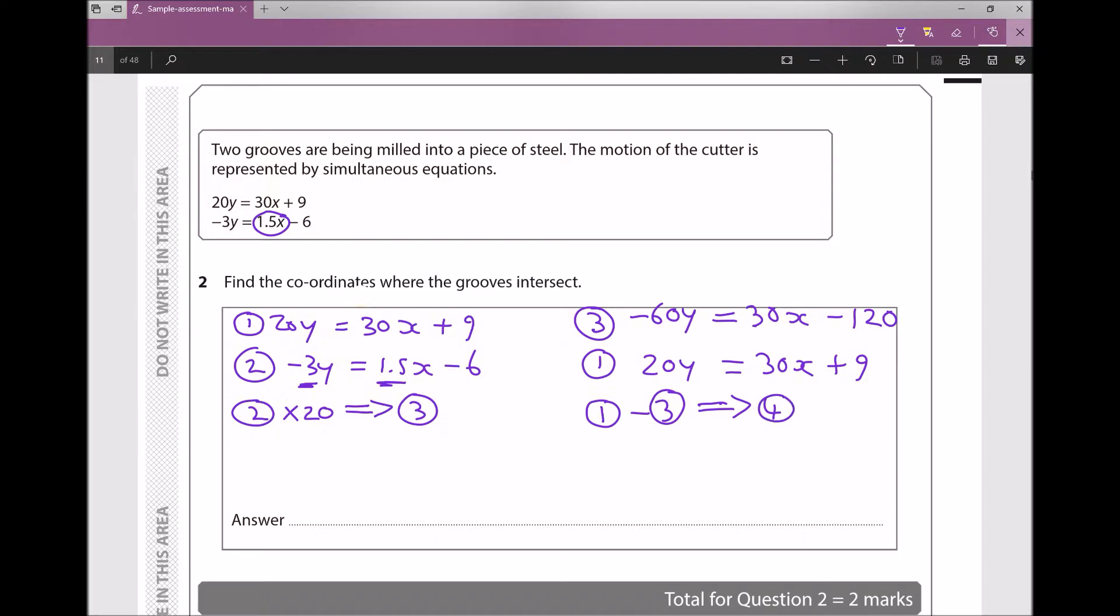First of all, if we do the coefficients of y, I've got 20y minus -60y. Well, minus a minus is a plus, so that's going to leave me with 80y. Next, I've got 30x minus 30x, which is just zero. And finally, I've got 9 minus -120, or 9 plus 120, which is 129.